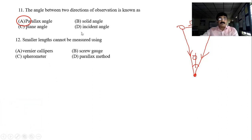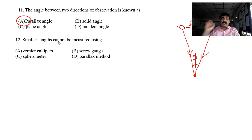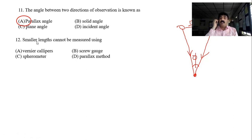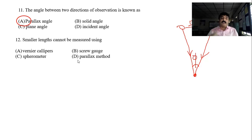Smaller lengths cannot be measured using the parallax method. Smaller lengths — centimeter, millimeter, micrometer — are measured using vernier calipers, a spherometer, or a screw gauge. These instruments are used for small dimensions such as wire thickness, pencil thickness, or marble thickness. The parallax method is used for larger distances — planet to planet, Earth to Moon, or star to star distances.